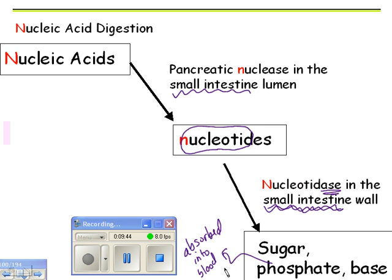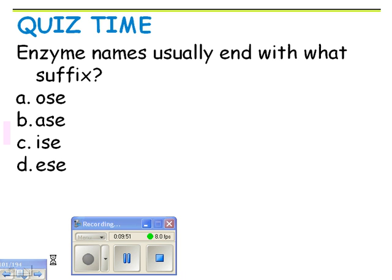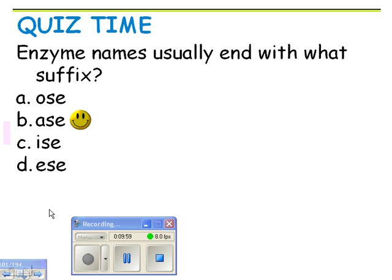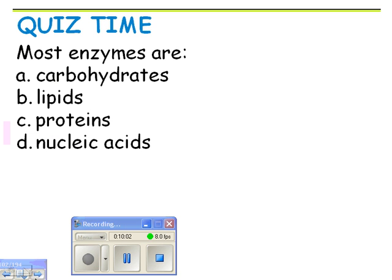Enzyme names usually end with the suffix '-ase.' '-ose' is for sugars, and '-ase' is for enzymes. Most enzymes are proteins.